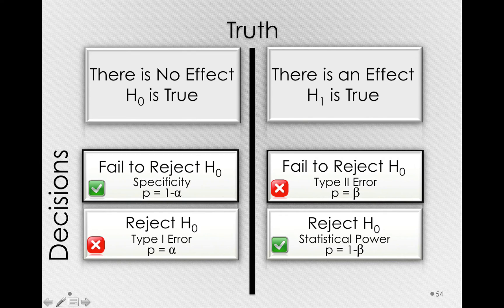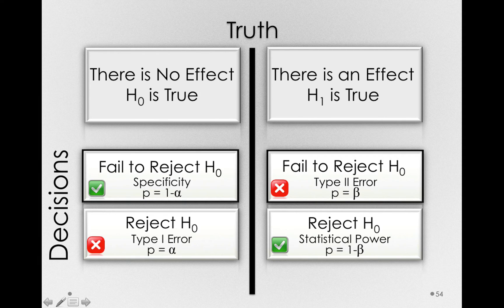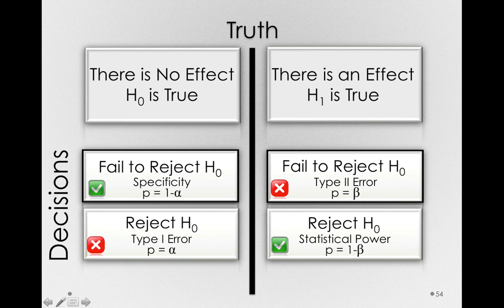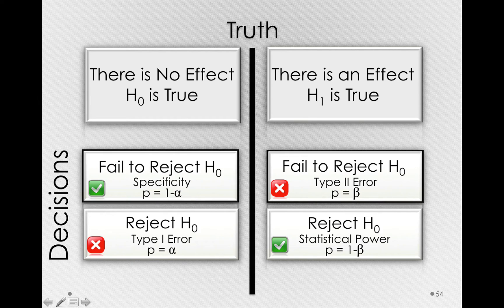Now let's consider the other decision we could make, failing to reject the null hypothesis. And remember, in one state of the world, this is the correct decision. We should fail to reject the null if we're in a state of the world where the null is true. But if we're in the state of the world where the null is false, where the alternative hypothesis is true, this is an error. We'll be failing to reject a false null hypothesis, or making a type 2 error.